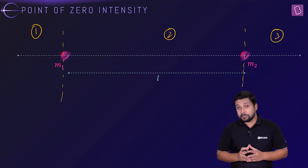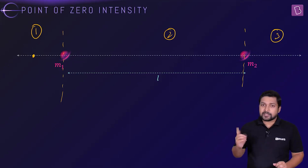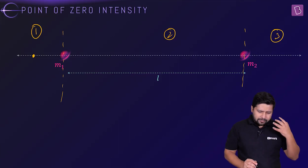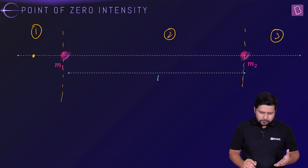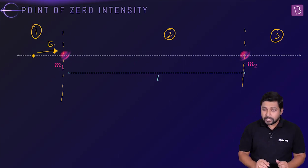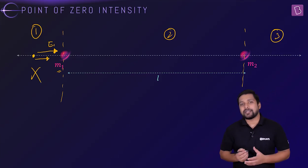Think about where it can be 0. If you think of zone number 1 and place a test mass there, because of M1 there will be an attractive force in this direction, which means the direction of the field will also be in this direction. Because of the second mass also, it will be in the same direction. So there is no chance that they will be cancelling each other.